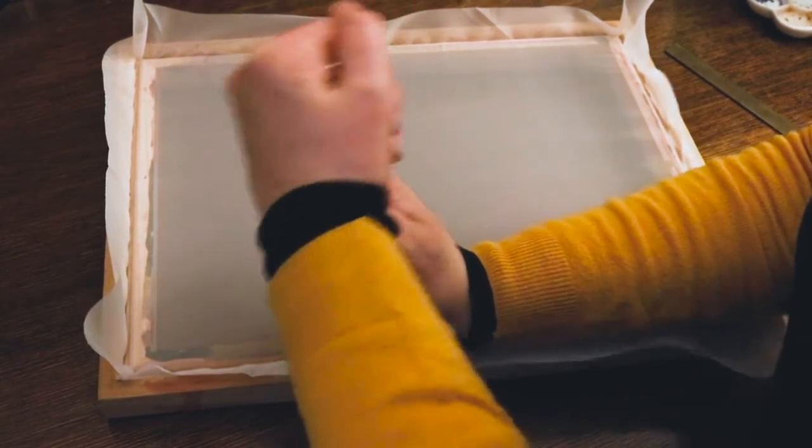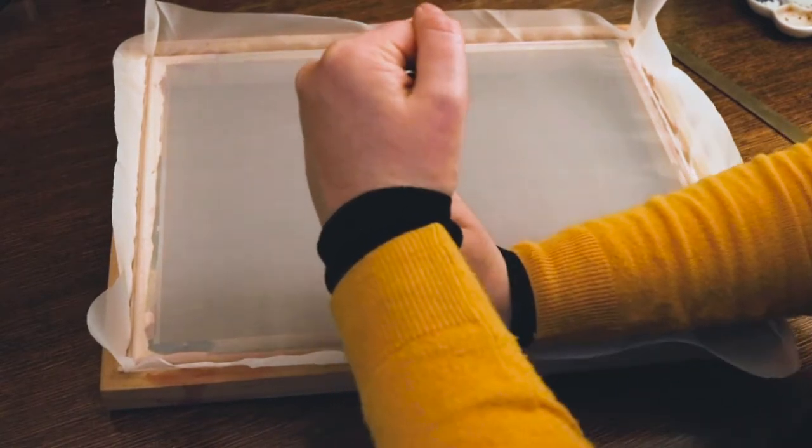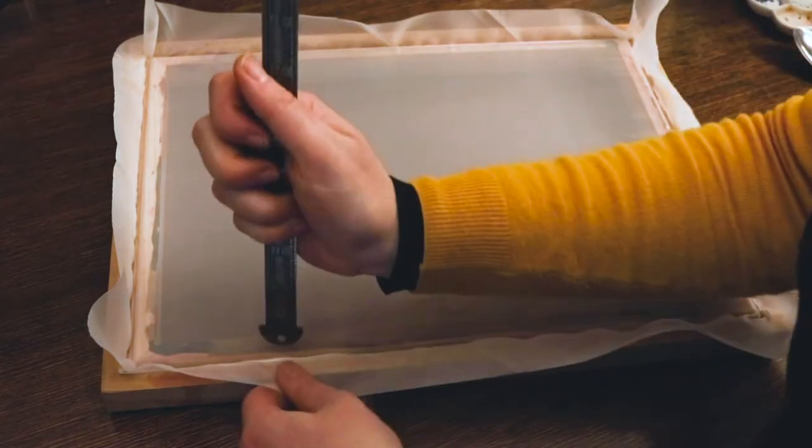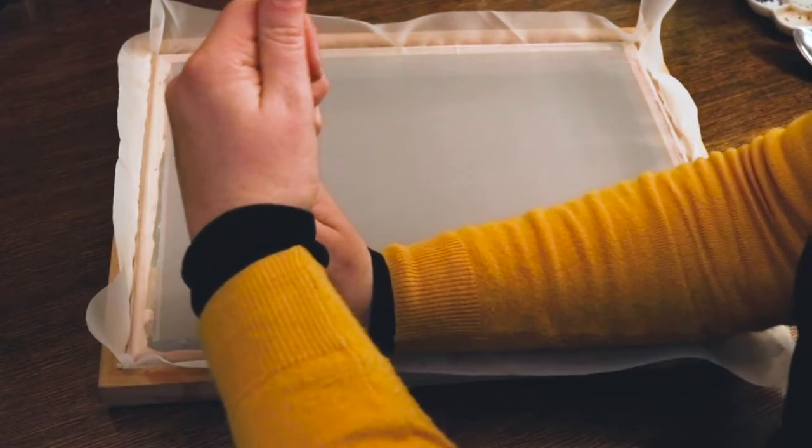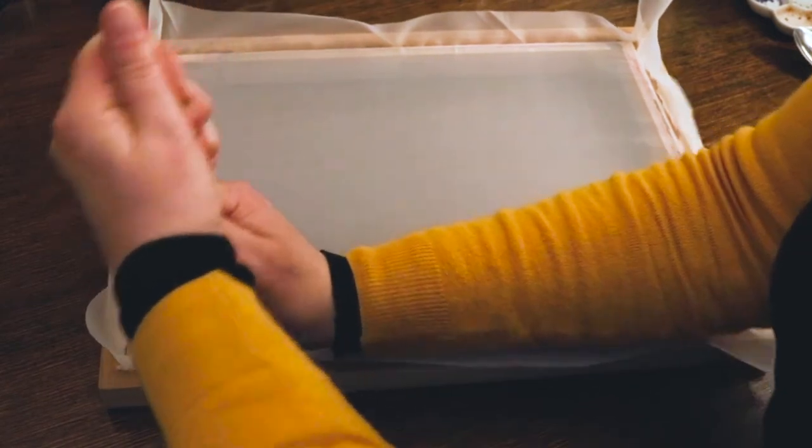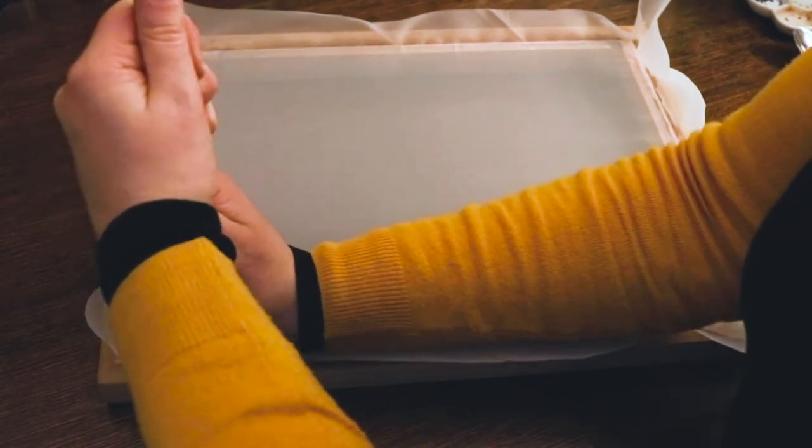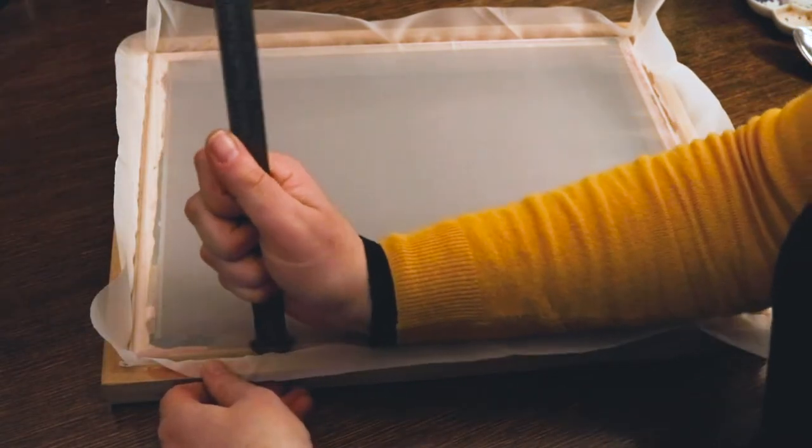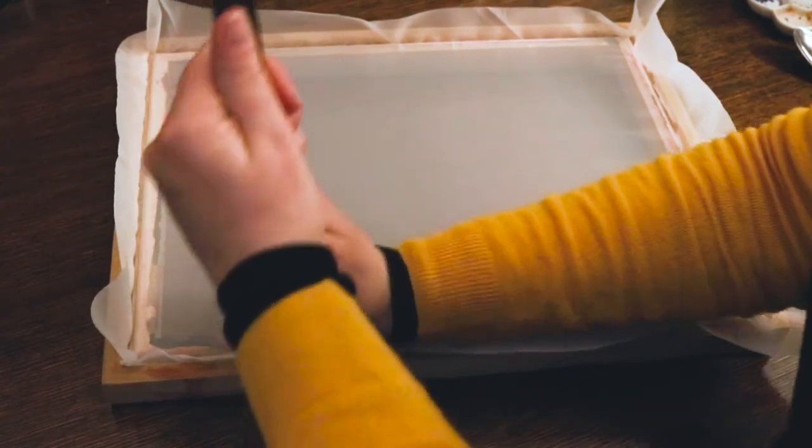If you want to make your own screen printing frame from scratch like this one, you would just need to make a wooden frame and then use a router tool to cut a groove all the way around. Speedball sells spare cord that you can buy, but I believe that something called spline cord will do the trick and should be available from hardware shops in the section where they sell materials for window screens.